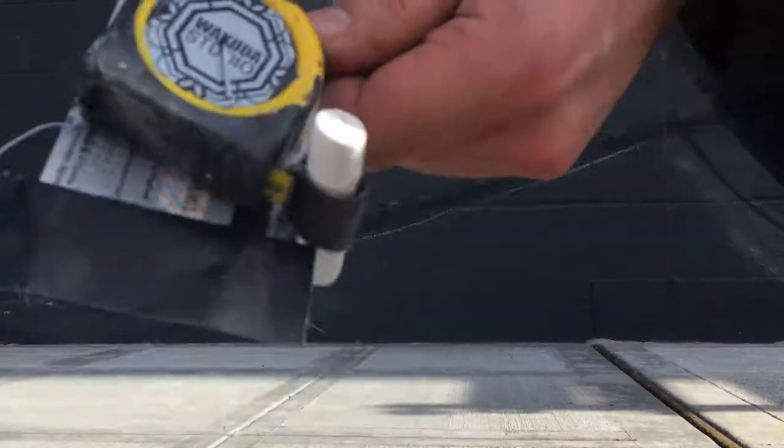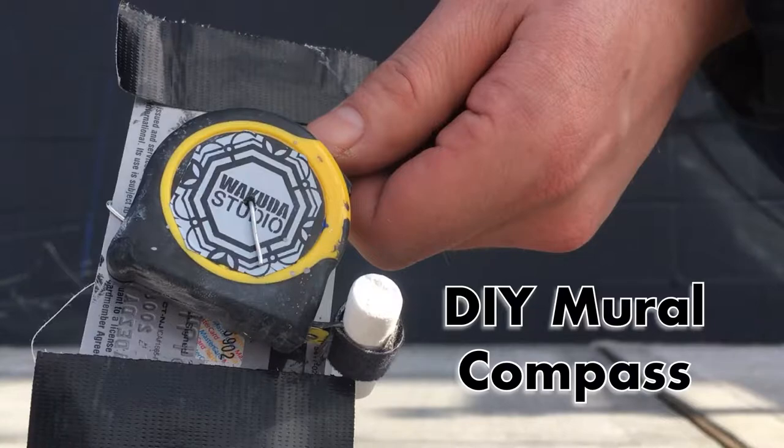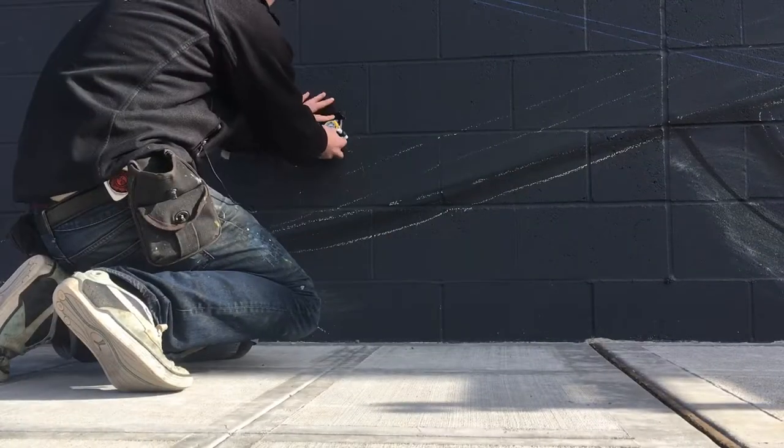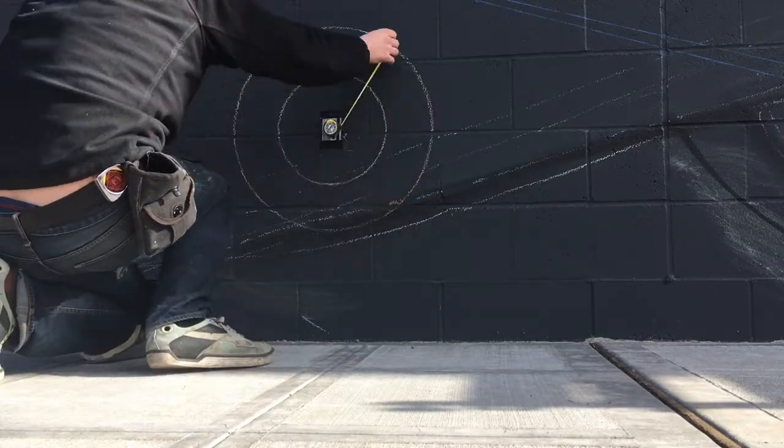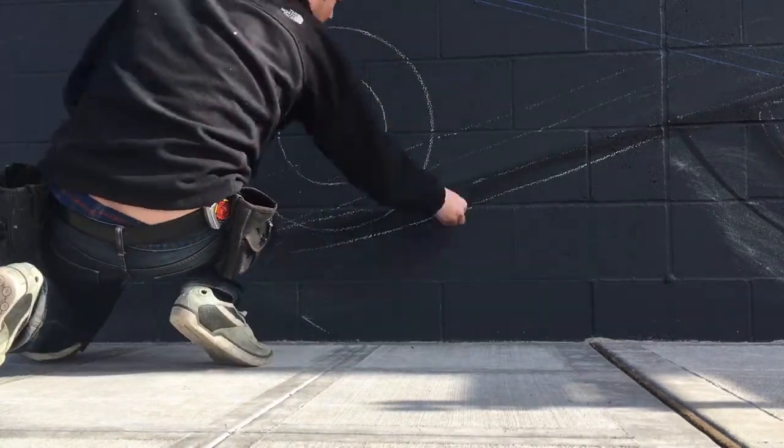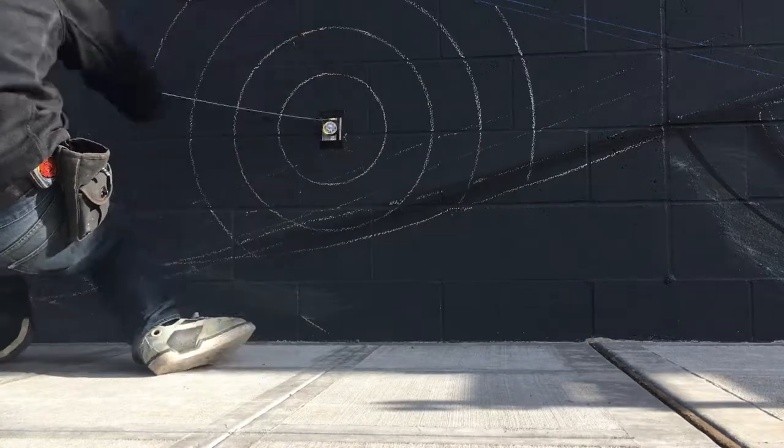I call it the Wakuda Mural Compass. This helps me create extremely large circles over 10 feet in diameter perfectly, quickly, and on a vertical or horizontal surface using whatever medium I choose.